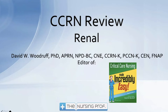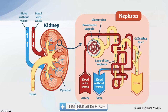Welcome back to CCRN review. We're talking about the renal section, where we need to know about both acute and chronic renal dysfunction — acute kidney injury and chronic renal failure. To understand what's happening with these conditions, we need to look at the kidney and its different components that may be affected.